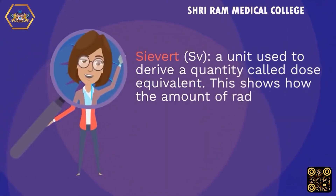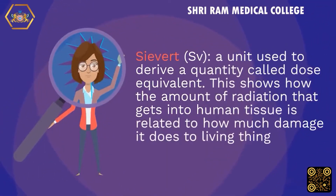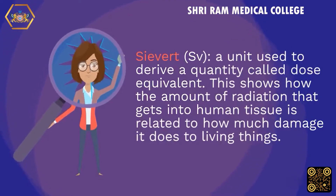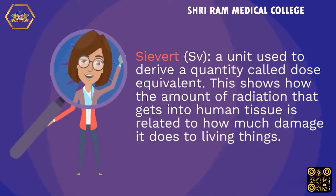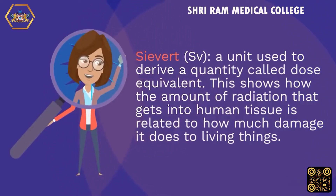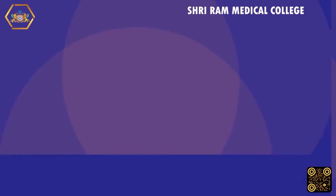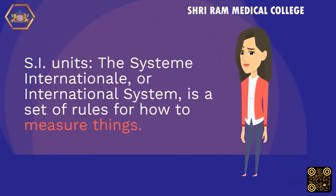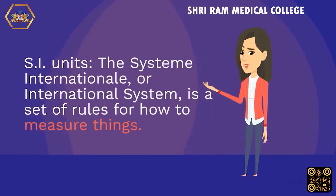Sievert (Sv): a unit used to derive a quantity called dose equivalent. This shows how the amount of radiation that gets into human tissue is related to how much damage it does to living things. SI units: the International System, a set of rules for how to measure things.